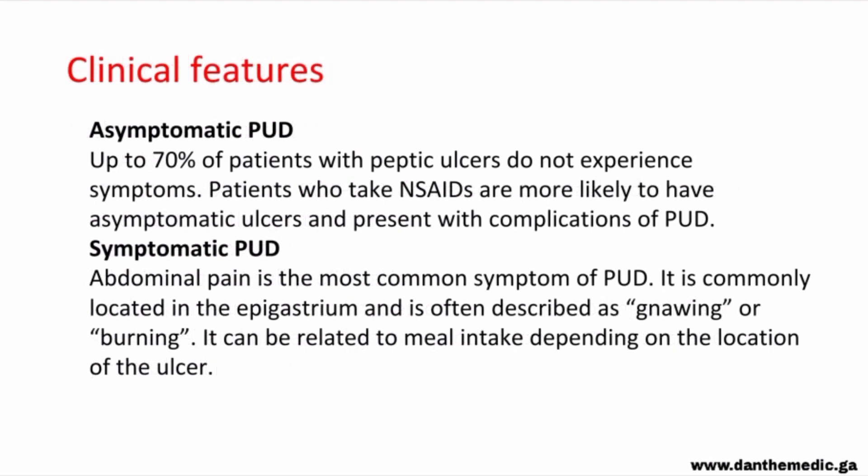Talking about clinical features: peptic ulcer disease may be asymptomatic or manifest with a variety of features such as general dyspepsia or complications like perforation or bleeding. Up to 70% of patients with peptic ulcer disease do not have symptoms. For symptomatic patients, the most common symptom is abdominal pain located in the epigastrium, sometimes radiating to the left or right upper quadrant, usually described as gnawing or burning.